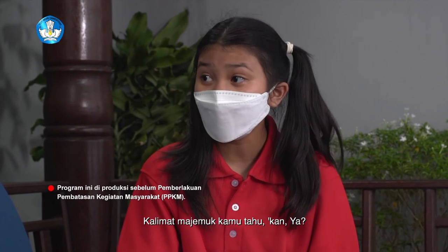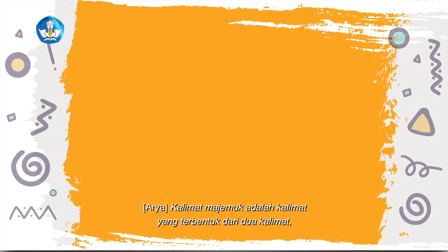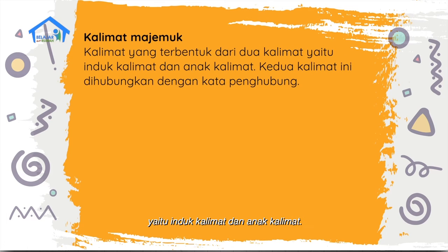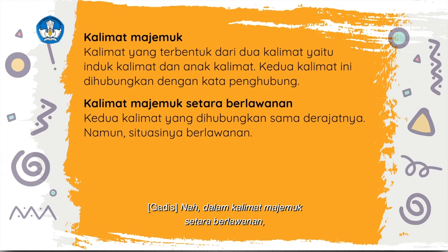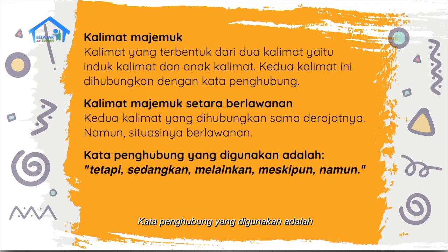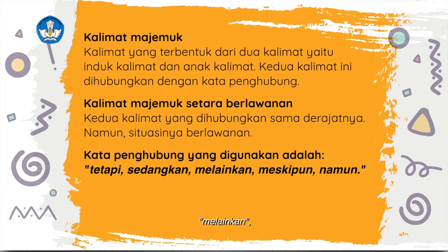Kalimat majemuk adalah kalimat yang terbentuk dari dua kalimat, yaitu induk kalimat dan anak kalimat. Kedua kalimat ini dihubungkan dengan kata penghubung. Dalam kalimat majemuk setara berlawanan, kedua kalimat yang dihubungkan sama derajatnya, namun situasinya berlawanan. Kata penghubung yang digunakan adalah: tetapi, sedangkan, melainkan, meskipun, namun.